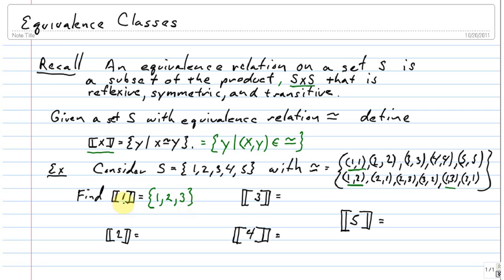So the equivalence class of 1 is 1, 2, and 3, because 1 is related to 1, 1 is related to 2, and 1 is related to 3.